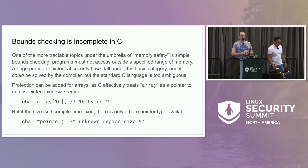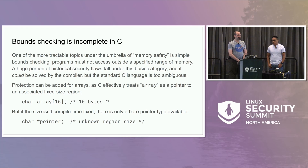For simple arrays that are fixed size at compile time, these protections exist. There are all kinds of features where you can say, if you've got an array of 16 bytes, that's fine — the compiler knows everything about it. It can do bounds checking at runtime and at compile time.